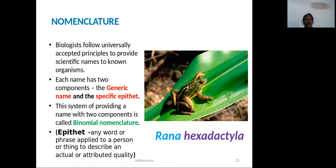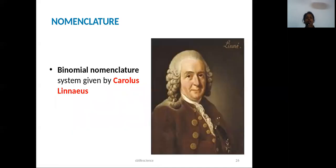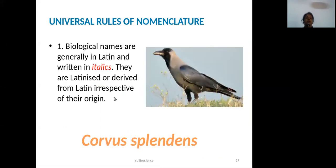Each scientific name has two components. For example, the frog's scientific name is Rana hexadactyla. The first component is the generic name (genus), and the second component is the species name (specific epithet). This system is called binomial nomenclature, introduced by the scientist Carolus Linnaeus.